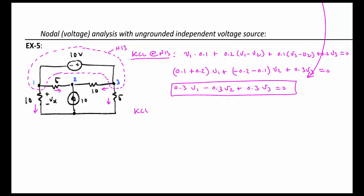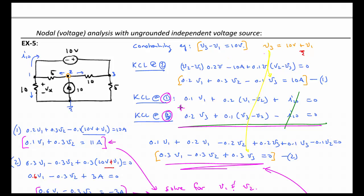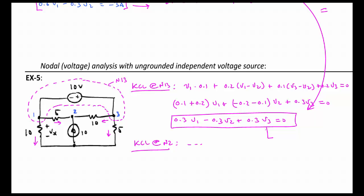I won't go through writing KCL at node 2 again. But this will be exactly the same as before and you will arrive at the same two equations. And of course, you can then do the substitution where you take your constraining equation, V3 is equal to 10 volts plus V1, and plug that in here. That now reduces that equation to two unknowns, and we'll have our other KCL equation from writing KCL at node 2 in terms of V1 and V2. So that is how you solve a circuit using nodal analysis when you have a voltage source that bridges two nodes.